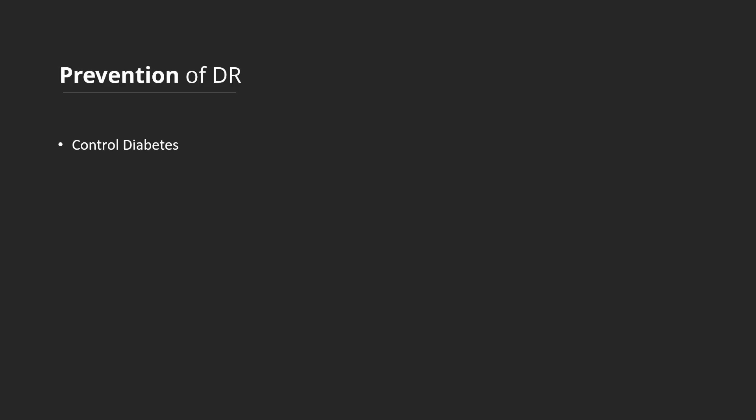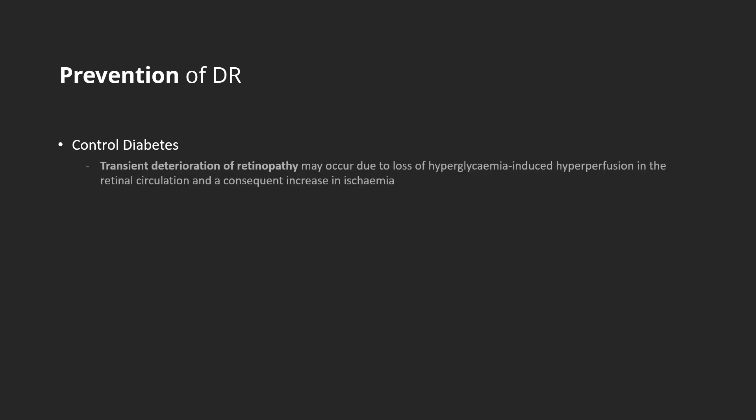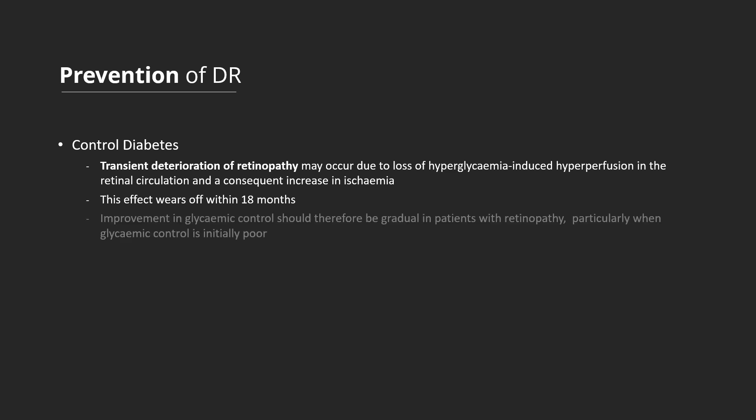Prevention of diabetic retinopathy. Good glycemic control, in both type 1 and type 2 diabetes, reduces the incidence and progression of diabetic retinopathy. When blood glucose is lowered, there can be a transient deterioration of retinopathy. This relates to loss of hyperglycemia-induced hyperperfusion in the retinal circulation and a consequent increase in ischemia. However, this effect wears off within 18 months. Improvement in glycemic control should therefore be affected gradually in patients with retinopathy, particularly when glycemic control is initially poor.